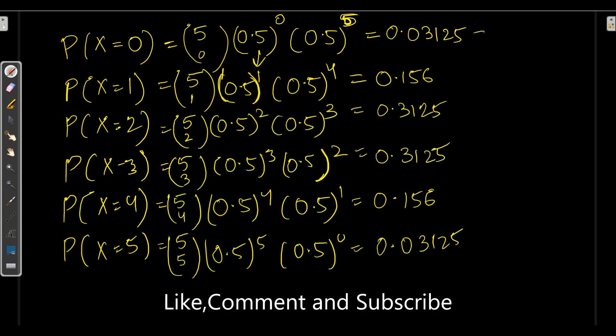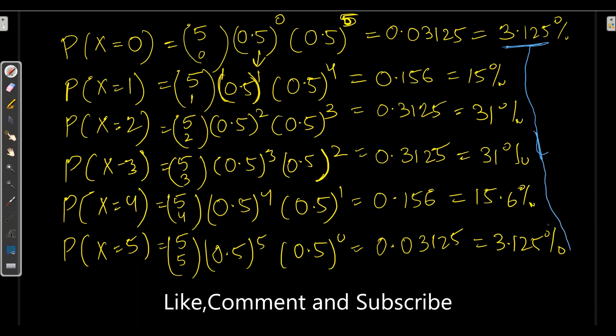So if I calculate in percentage, it will be 3.125%, 15%, 31% and same for 31% and then 15.6% and this will be 3.125. Now if I look at these values closely, first it is increasing from 3.1 to 15 to 31% and then it gets stabilized to 31% and then it is decrementing. Let's find out by plotting it into a graph.